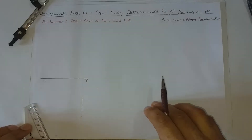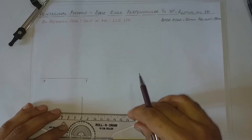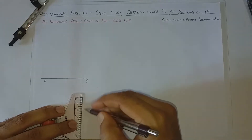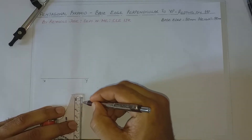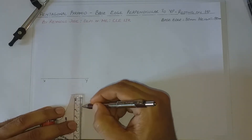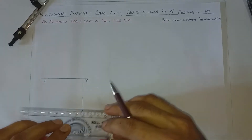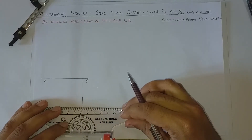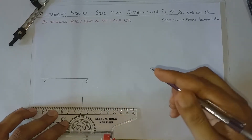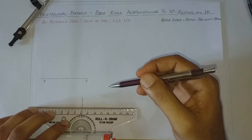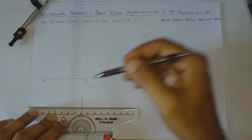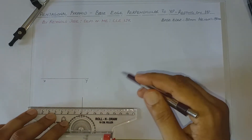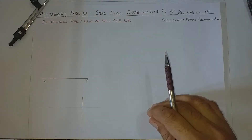I am going to draw a perpendicular bisector for this line. This is 30 mm, so the midpoint is at 15. I am going to draw a perpendicular bisector here. It is not necessary that you draw it with a compass — just a perpendicular bisector.